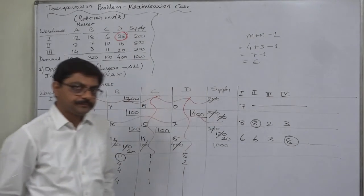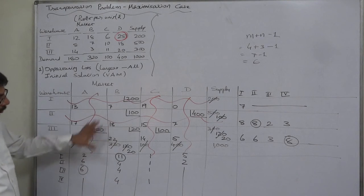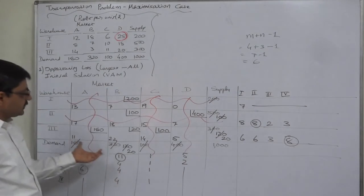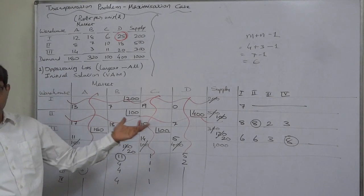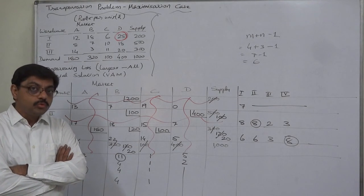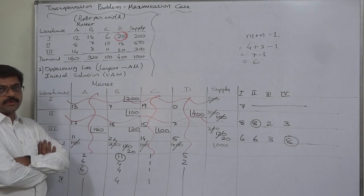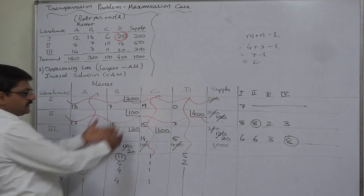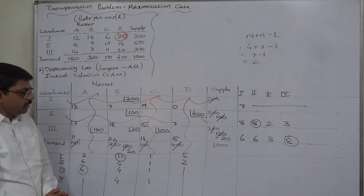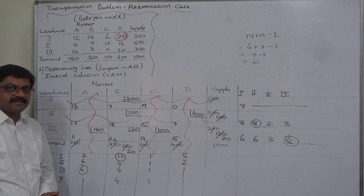Now we have to check the optimality of this solution. This is the initial solution, and we can calculate the cost at this stage. But before arriving at the conclusion whether this is optimal or not, we have to test the optimality. For that purpose we have to use the dual of this transportation problem. We will discuss the test of optimality and further process in the next lecture. Thank you very much.